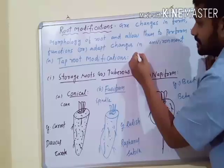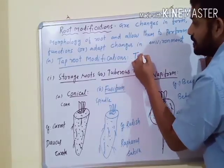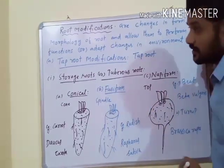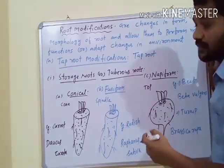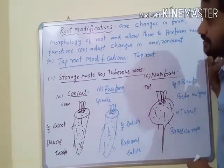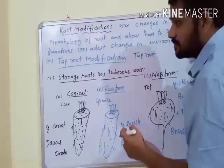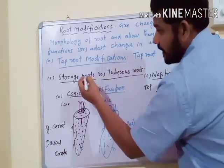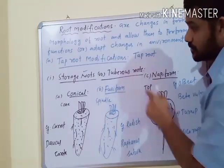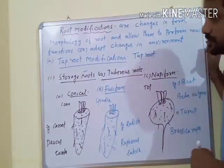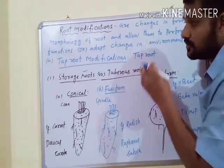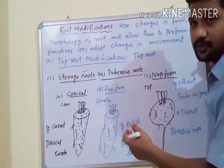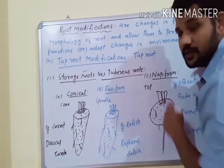In Tap Root Modifications, only the Tap Root stores food material or helps in other new functions, while the secondary roots remain the same. Tap Root Modifications are of various types. The first one is Storage Roots, also called Tuberous Roots, because the roots of some plants store food material and become tuberous.